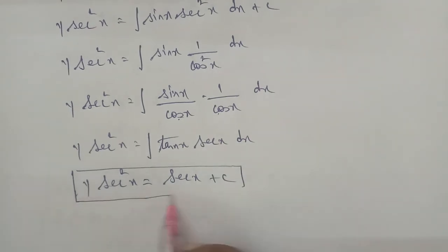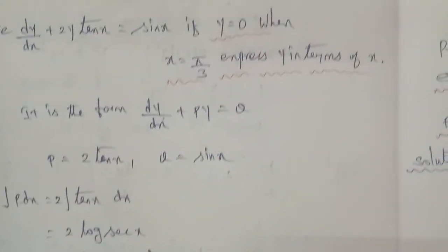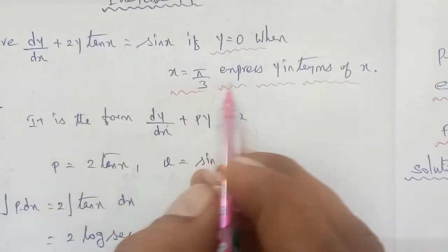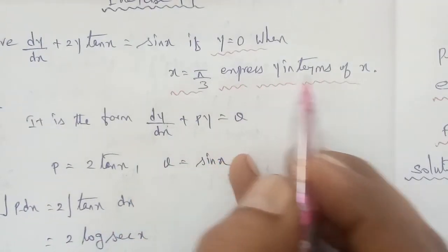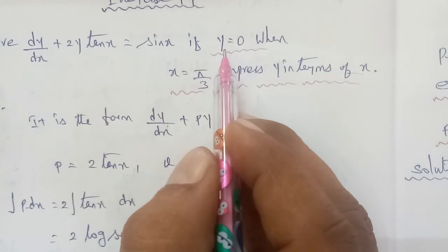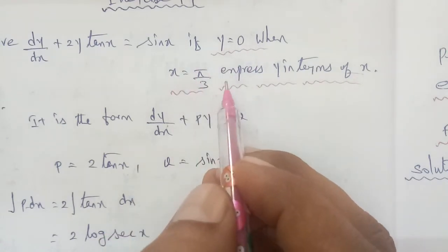Given the initial condition: y is equal to 0 when x is equal to π/3. We need to express y in terms of x, so we substitute these values into the general solution y·sec²x equals sec x plus c.